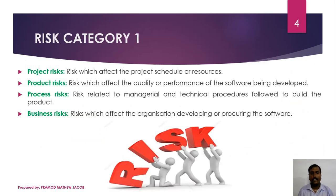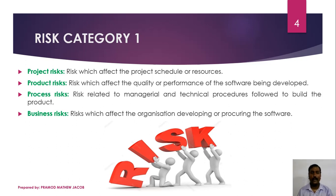Next are the various categories of risk associated with a software project. The first category is project risk, which may affect the schedule of the project being developed or the resources associated with project development. The second one is product risk, which may affect the quality or performance of the software product being developed. The third one is process risk, which may relate to the managerial and technical procedures and strategies followed to develop a particular software product.